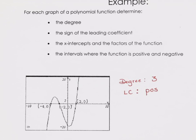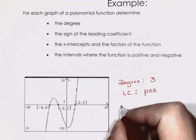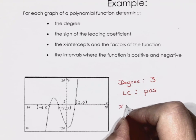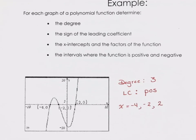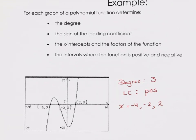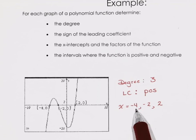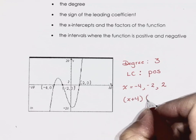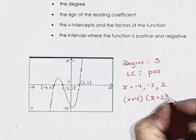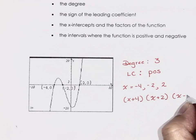Now, x-intercepts — and then I want you to turn them into factors. Where are my x-intercepts? Those would be my x-intercepts. Now change those into factors: that one would be (x + 4), this one would be (x + 2), and this one would be (x − 2).